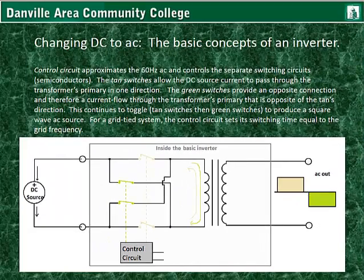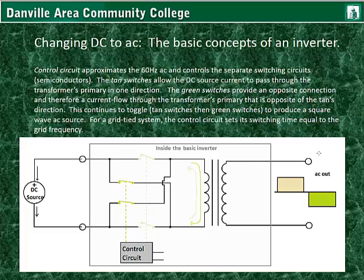For a grid-tied system, the control circuit sets its switching time equal to the grid frequency. These inputs go over to the grid, and it would measure the grid frequency and try to time and maintain the frequency exactly the same.